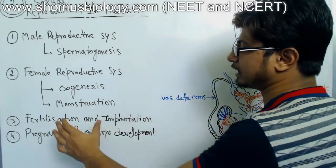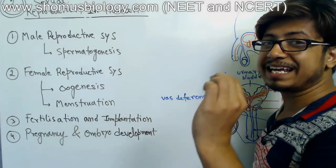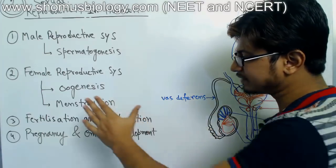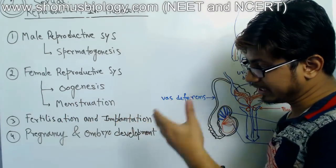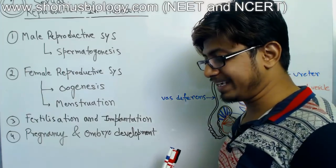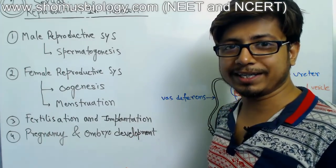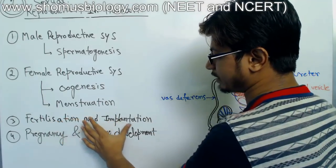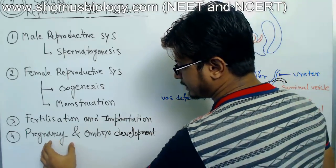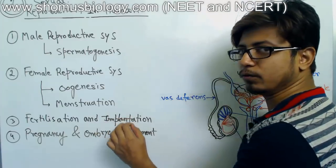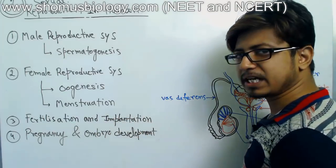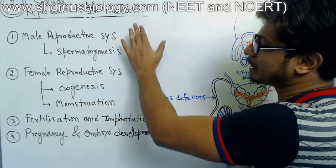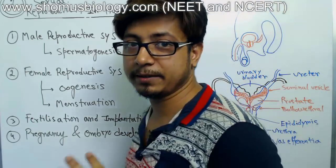The third part is fertilization and implantation of the fertilized egg — also known as a zygote — into the endometrium of a woman. In humans, we always undergo internal embryogenesis; the embryo develops inside the womb of the mother. The fourth component is pregnancy and embryo development in the womb, including the details of the placenta and how the growing embryo takes nutrients and modifies its structure.